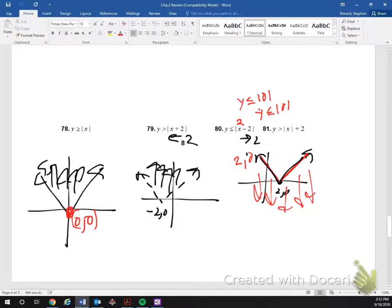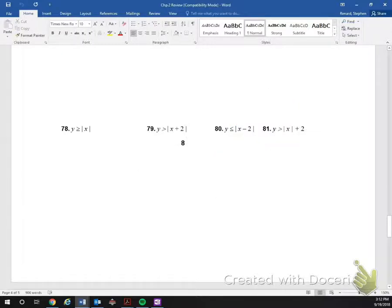And again, you can pick any test point. So here if I wanted to pick 0, 0, plug that in. I have 0 is less than or equal to the absolute value of 0 minus 2. That's going to give me 0 is less than or equal to the absolute value of negative 2, or 0 is less than or equal to 2, which is true.